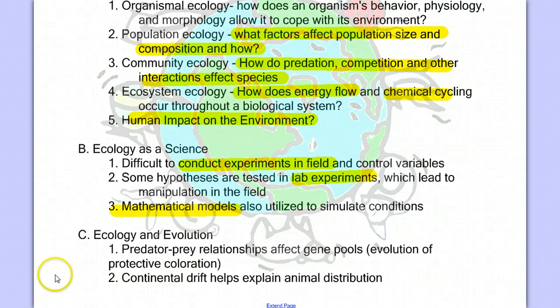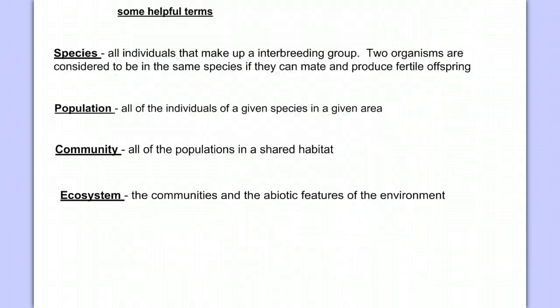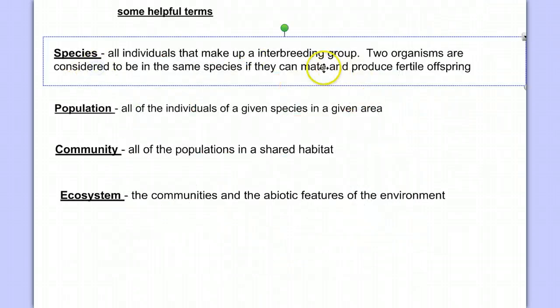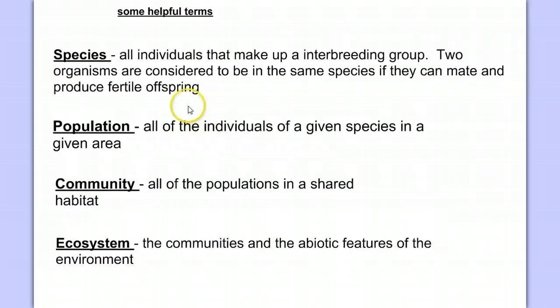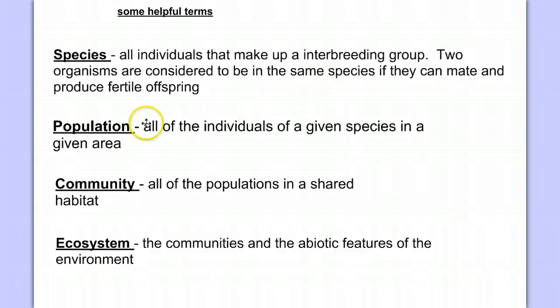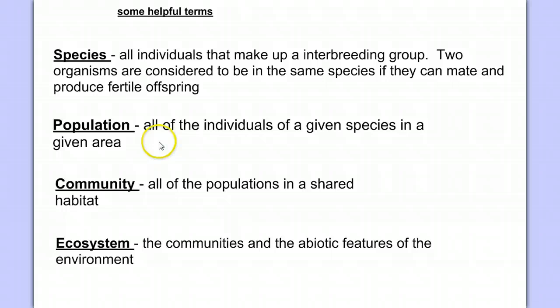Before we go much further, let's make sure we can define some helpful terms. First, species — all the individuals that make up an interbreeding group. Two organisms are considered to be in the same species if they can mate and produce fertile offspring. Population: a population is all the individuals of a given species in a given area. For example, all of a certain species of grasshopper in my backyard would be a population of grasshoppers.